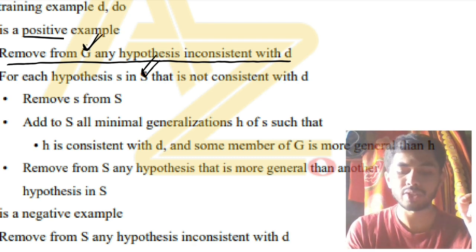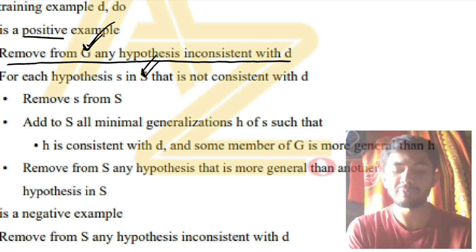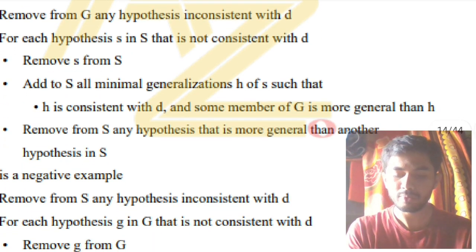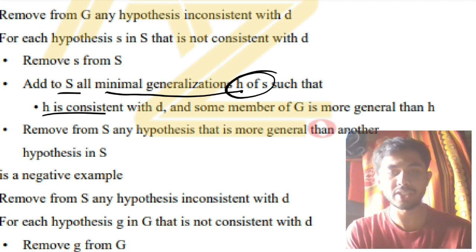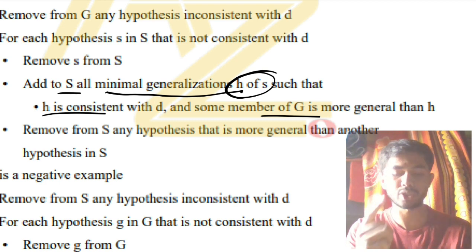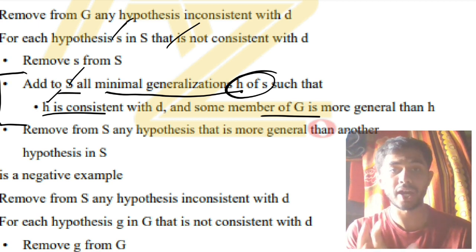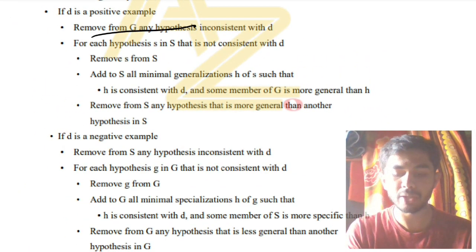After that, add to S all minimum generalizations of h in S. If h is consistent with d, make G more general than h. For the negative example, the pattern swaps: wherever S appears you write G, wherever G appears you write S, wherever 'more general' is used you write 'more specific'. Just write it once and you'll understand — this can fetch you seven to eight marks easily.